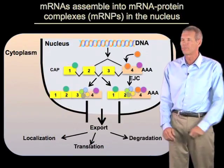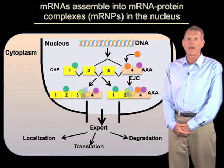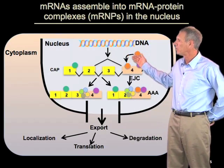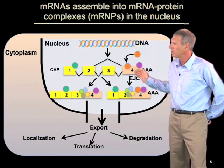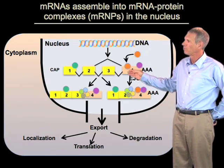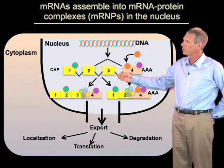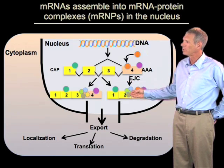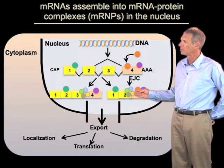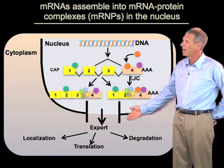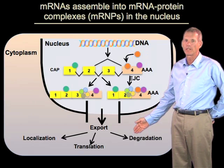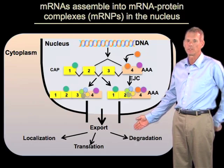During the process of RNA biogenesis in the nucleus, a number of factors begin to associate with the mRNA. These include RNA binding proteins, which just bind to the transcript. But in addition, there are certain complexes which are added during the process of RNA processing. For example, the process of splicing, where introns are removed, can deposit a protein complex referred to as the exon junction complex at the site where the intron was removed. Many of these factors then travel out to the cytoplasm with the mRNA and can affect its localization, translation, and degradation, and we'll discuss some of these later on in the talk.